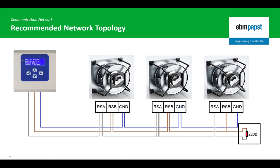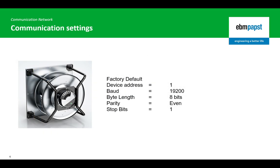Our recommendation for a network of EBM PAPST fans controlled by the MDC controller is to fit a 220 ohm resistor. Every standard EBM PAPST fan with Modbus functionality leaves the production line with the same parameters: Modbus device address 1, 19200 baud, 8 bits, even parity, with one stop bit.